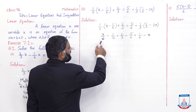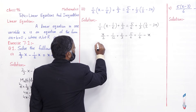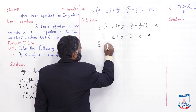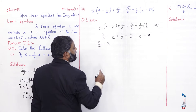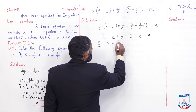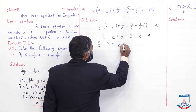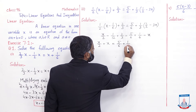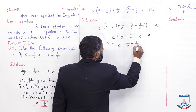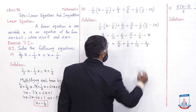Ab x wali jitni bhi terms hain unko left side pe le jaate hain. x/2 hai, yeh minus x hai. Left side pe aakar plus x ho jayega. Aur constant terms jo without variable hain unko right side pe le jaate hain: 5/6 plus 1/6. Minus 1/12 right side pe jayega to plus 1/12 ho jayega. Aur plus 2/3 minus 2/3 aa jayega.